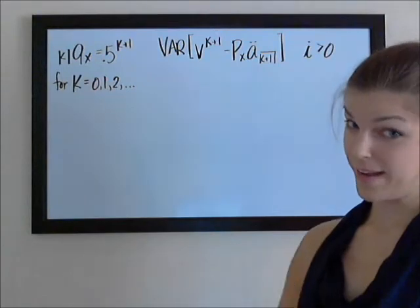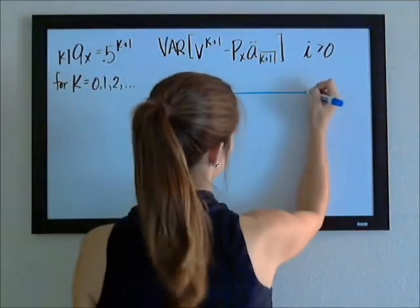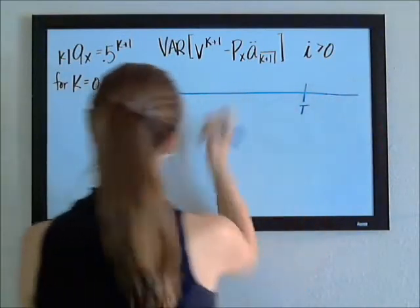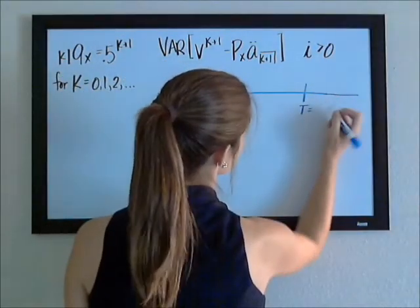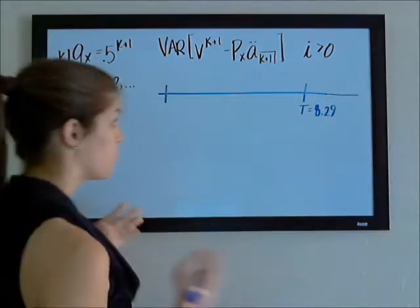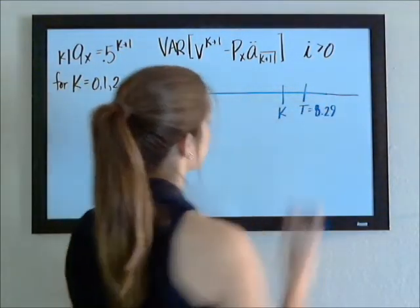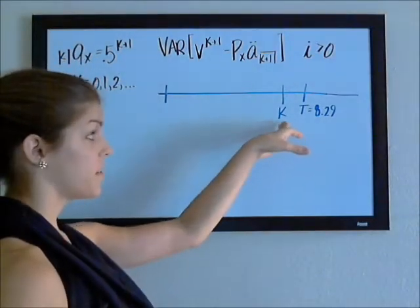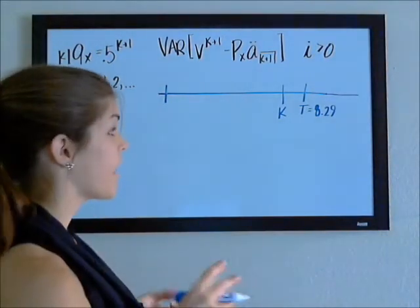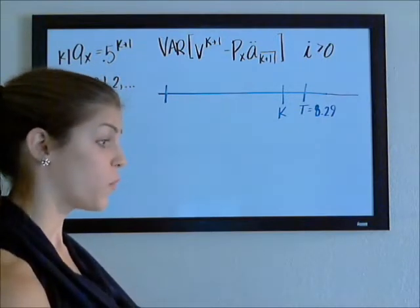So first of all, let's make sure we understand what k even is. Just like t of x is your future lifetime, let's say you live 8.29 more years. k is the number of whole years that you live. So if you really live 8.29 more years, you live 8 complete years. If your future lifetime was 10.82, then you would live k equals 10 more complete years.